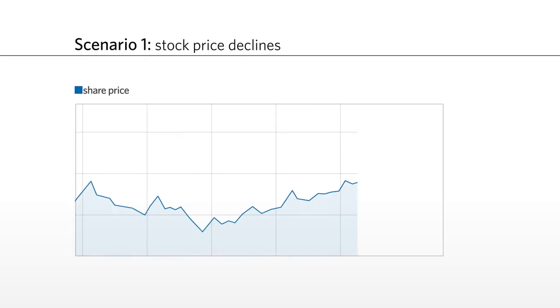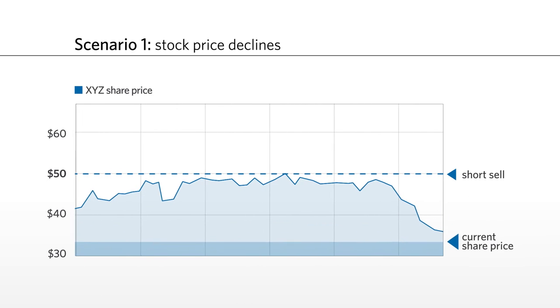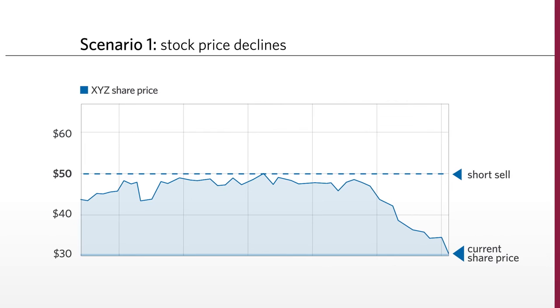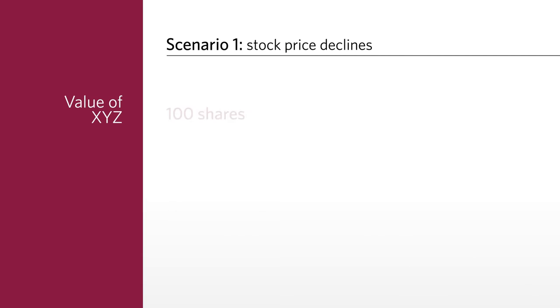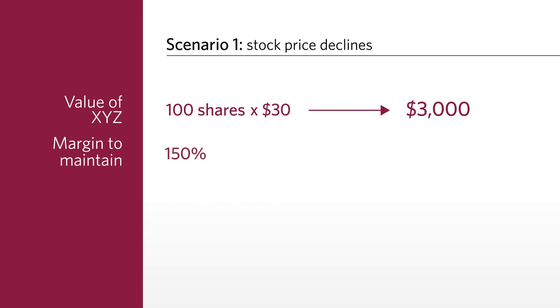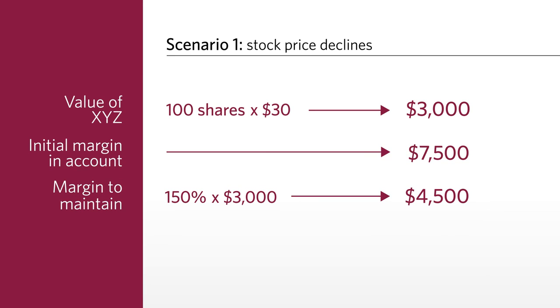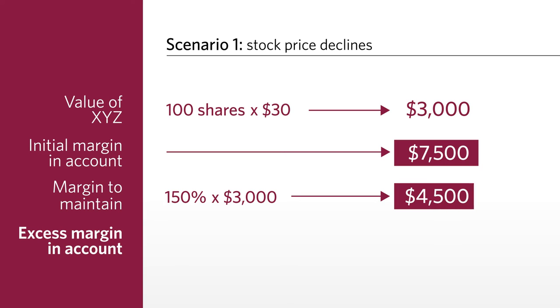Next, let's look at what happens after the short sale is completed. In Scenario 1, the price of XYZ moves lower, as you were hoping. Imagine XYZ is now trading at $30. The value of XYZ is 100 shares times $30 equals $3,000. The margin needed to maintain 150% of this $3,000 is $4,500. The initial margin in the account is $7,500, and the excess margin currently in your account is $7,500 minus $4,500 equals $3,000. This excess margin can be used to put on additional positions, withdrawn, or act as a buffer in the event that XYZ moves higher in the future.